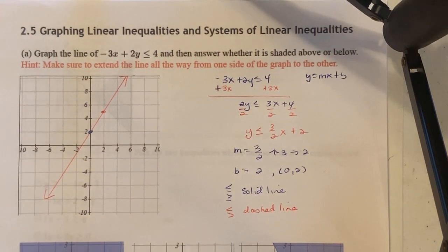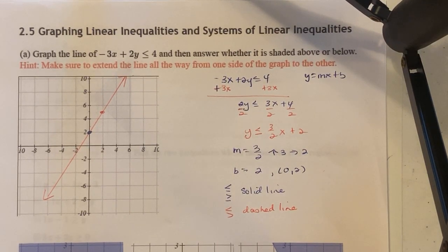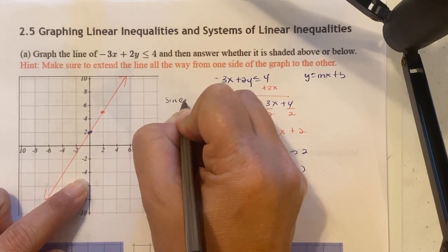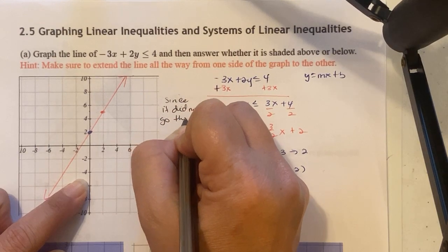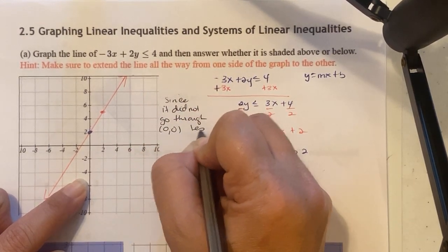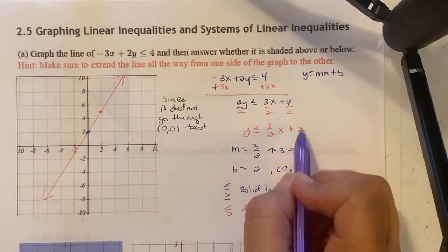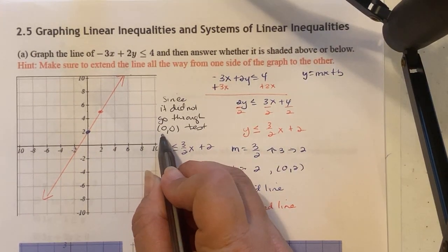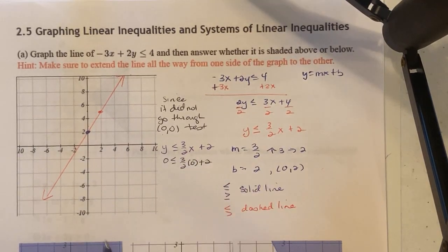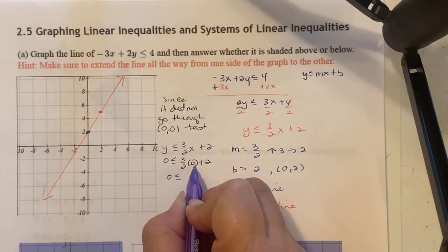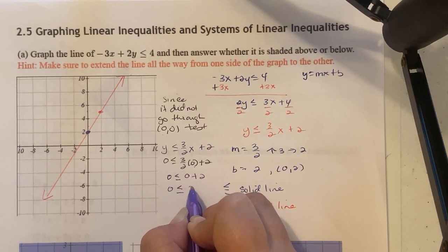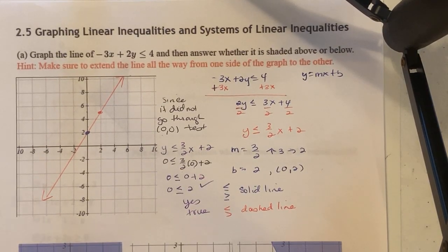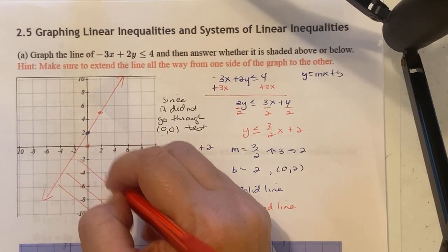Because we have less than or equal to, we draw a solid line extending all the way across. Now for the shading: do we shade above or below? Since the line does not cross the origin (0, 0), we test that point. Substituting into y ≤ 3/2 x + 2: is 0 ≤ 2? Yes, that's true. Since (0, 0) is below the line and it worked, we shade downward.